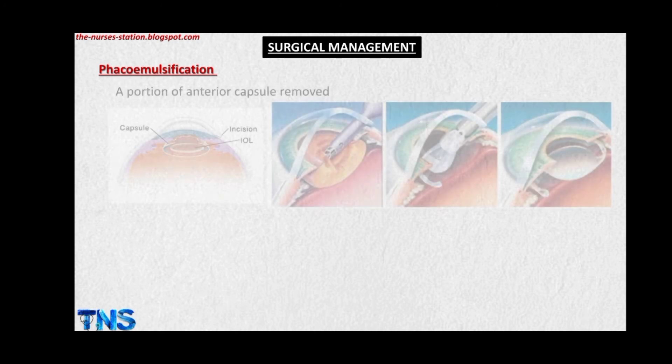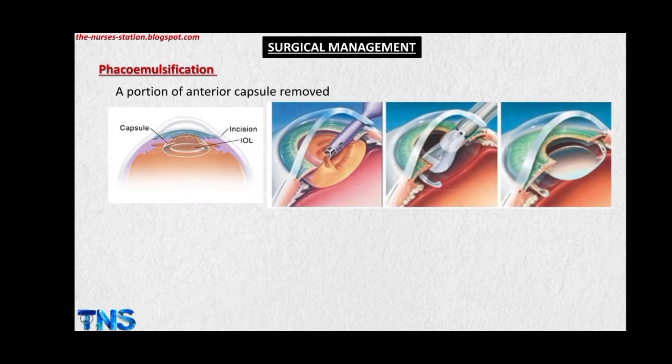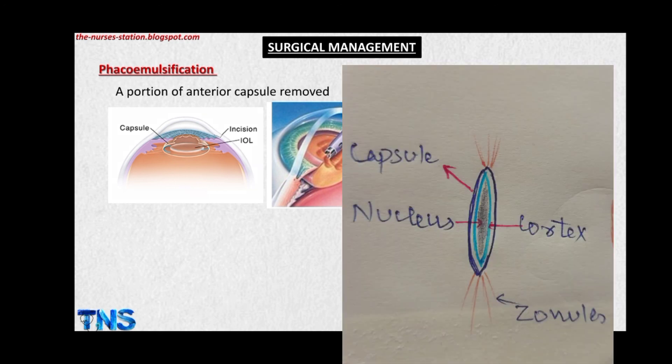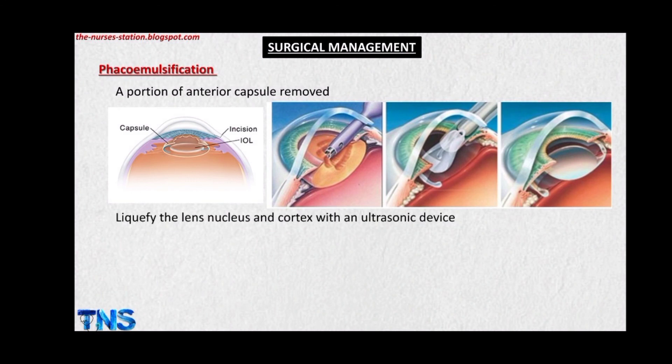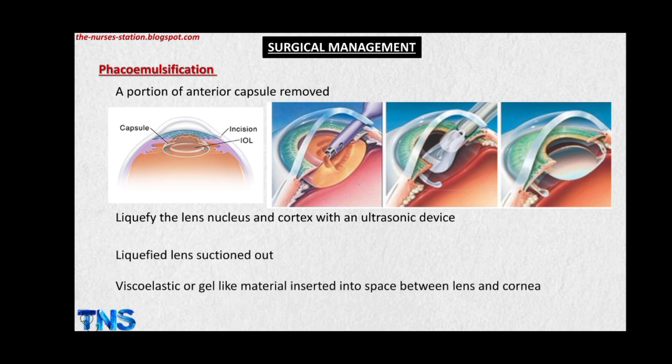The surgical management includes a procedure called phacoemulsification. In this procedure, a portion of the anterior capsule of the lens is removed. Using an ultrasonic device, the lens is then liquefied and suctioned out. A viscoelastic or gel-like material is inserted into the space between the lens and the cornea so that the anterior compartment of the eye does not collapse.